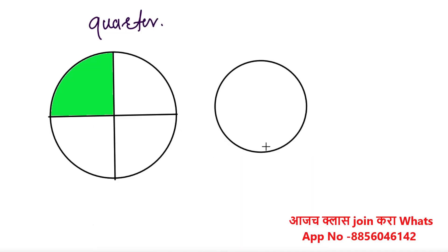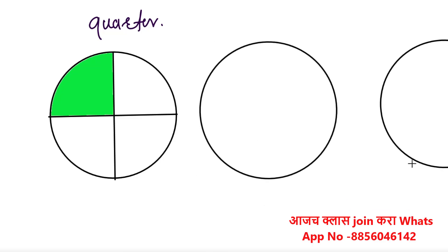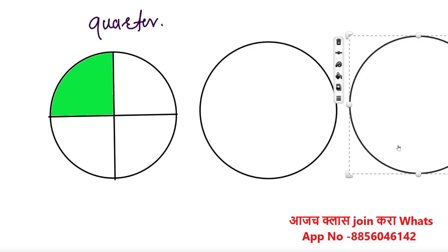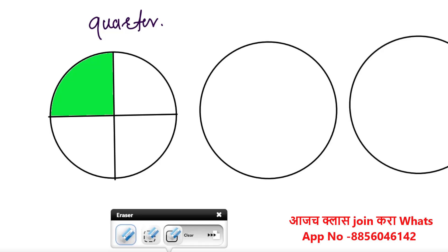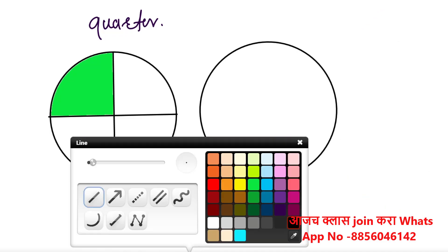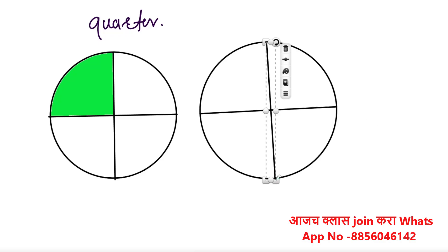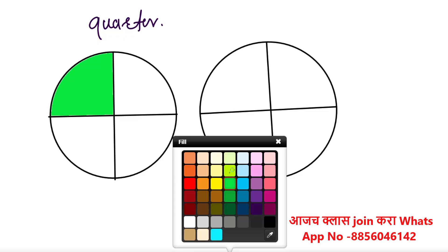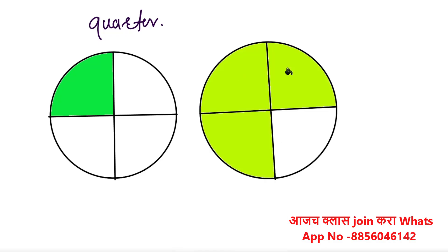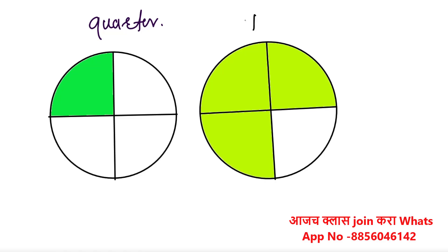When the same diagram is drawn here and two parts are colored, that is known as Half. When the same diagram has three parts colored, then it is known as Three-Quarter.